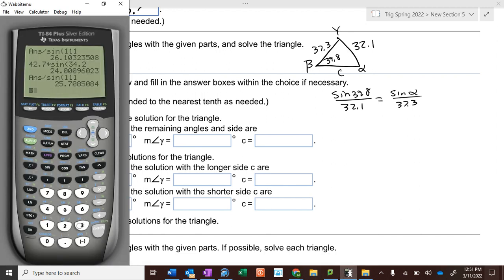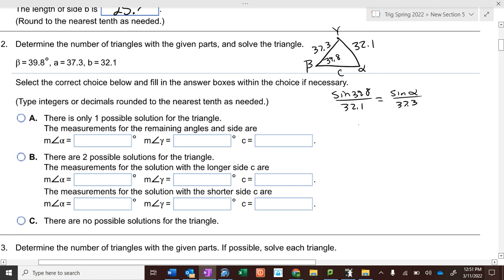So 37.3 times the sine of 39.8 divided by 32.1, we get a decimal, and then we go second sine, second answer, and the angle is 48.1. Now alpha could be 48.1, or alpha could be what? 180 minus 48.1, which is 131.9, right?